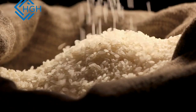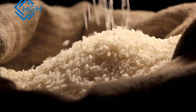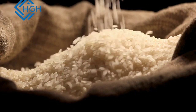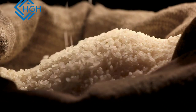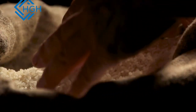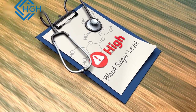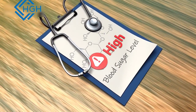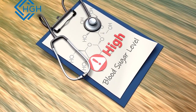Refined carbohydrates: foods made from refined grains, such as white bread, white rice, and most pastries, lack essential nutrients and fiber. They can lead to rapid spikes in blood sugar levels and over time may contribute to weight gain and other health issues.